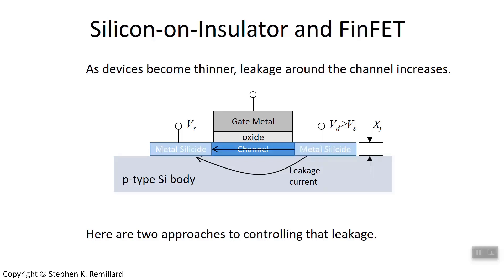We just went over three ways to control drain induced barrier lowering as devices get smaller. The point I would make about devices getting smaller is that they scale in all of their dimensions, which means that they get thinner as well. So the channel becomes thinner and thinner, giving more opportunity for leakage current through the body, directly between the drain and the source.